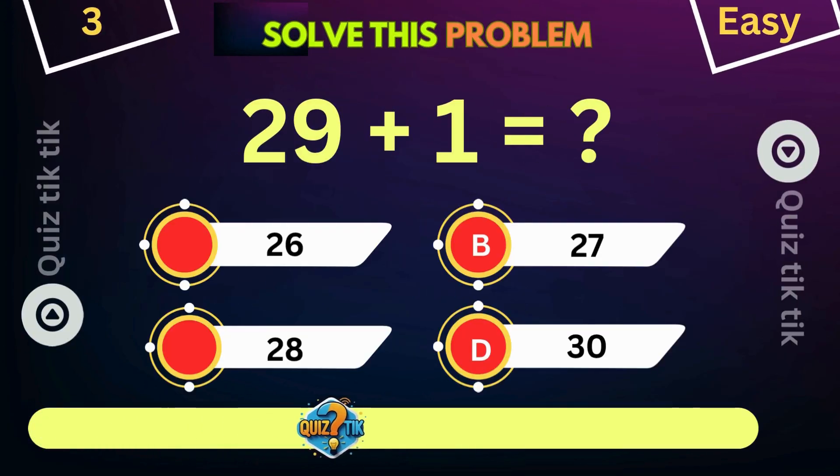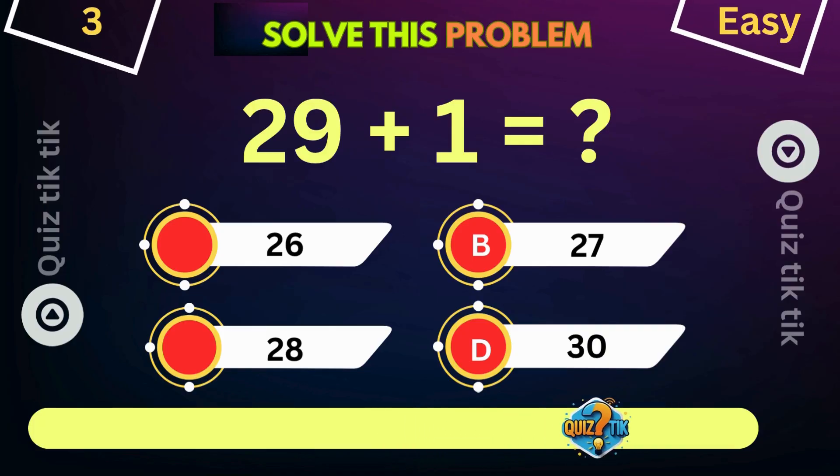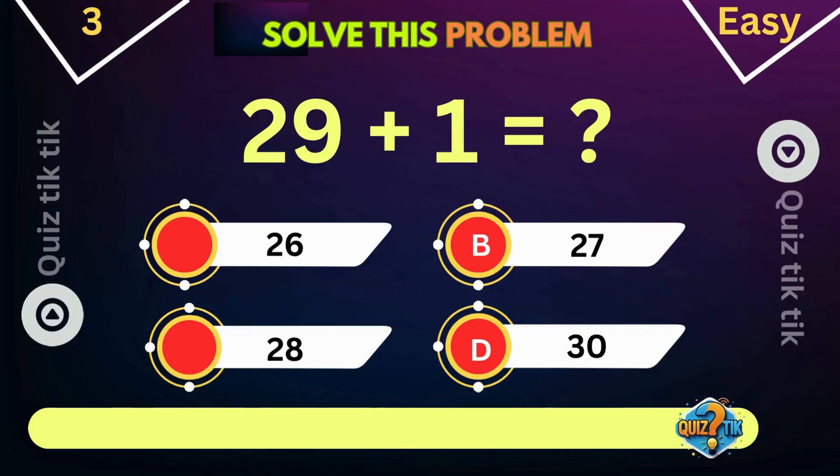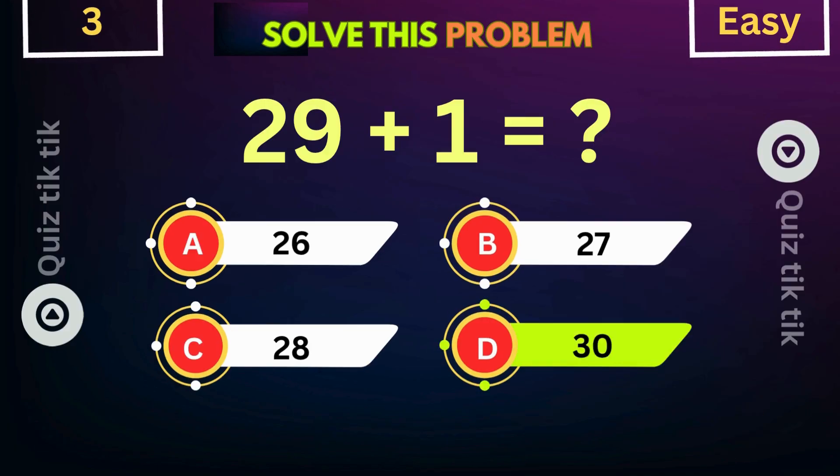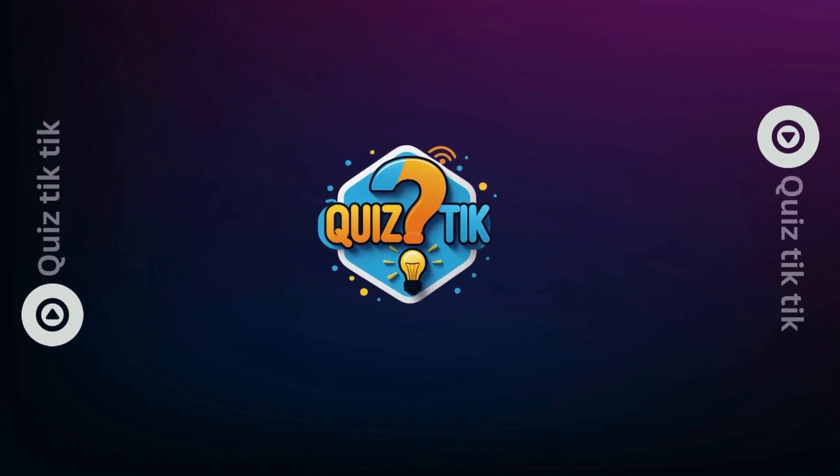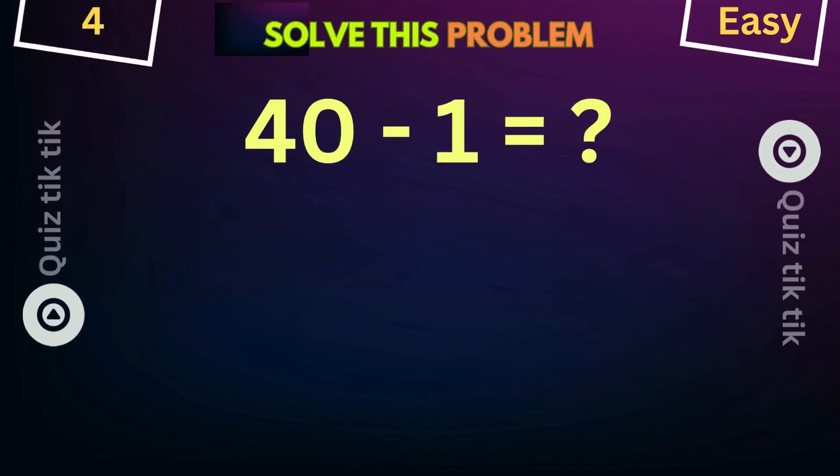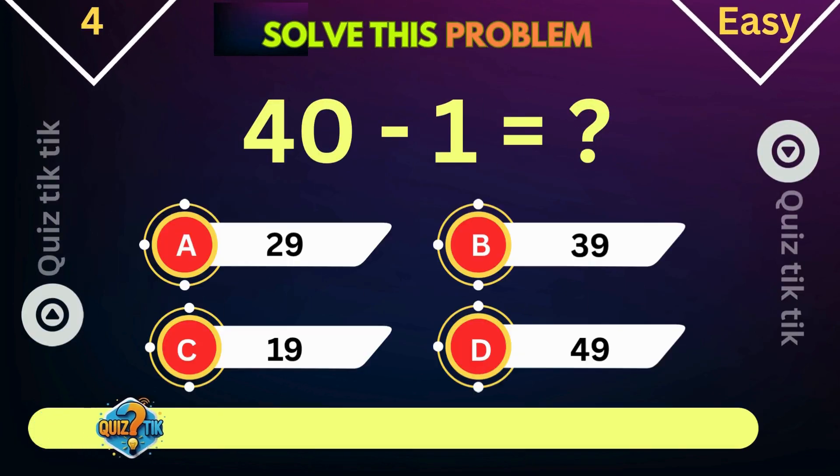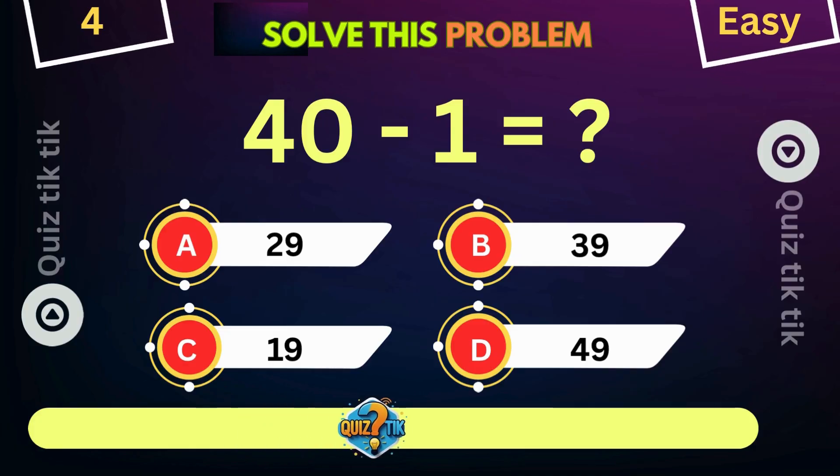29 plus 1 is equal to. 40 minus 1 is equal to.